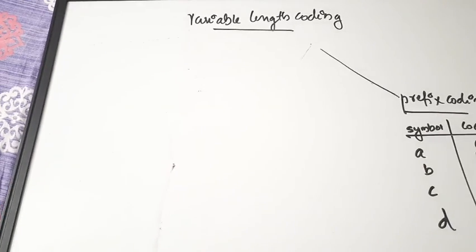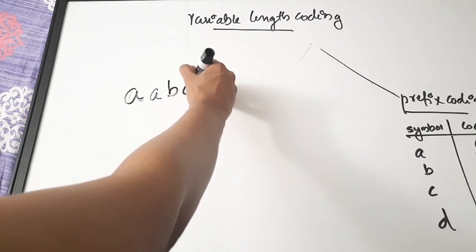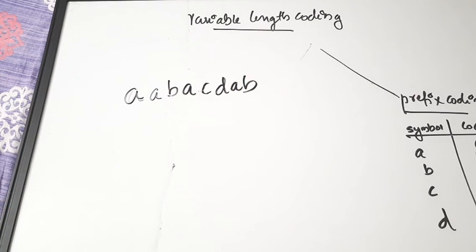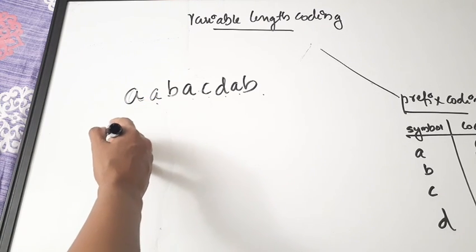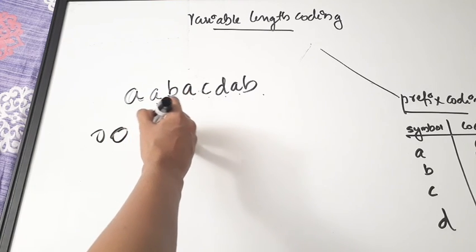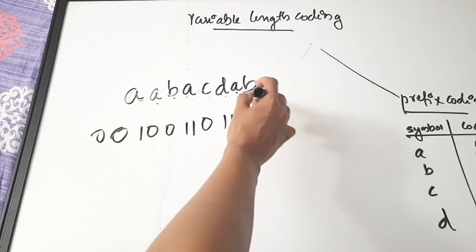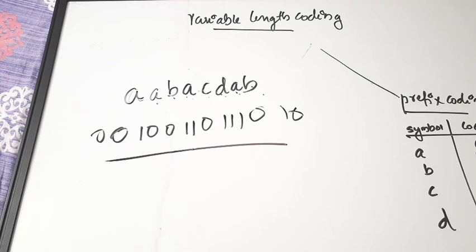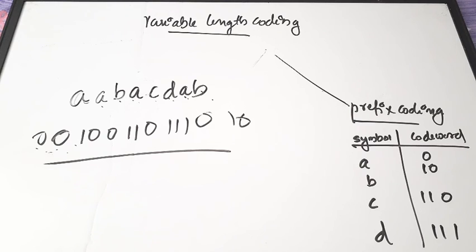Now sending a message A, A, B, A, C, D, A, B — eight symbols. Writing the corresponding code words: A=0, A=0, B=10, A=0, C=110, D=111, A=0, B=10. No bit sequence is a prefix of another, so the receiver can uniquely decode the message. I hope it is clear what fixed length coding and variable length coding are; these classifications are the foundational concepts of coding theory.